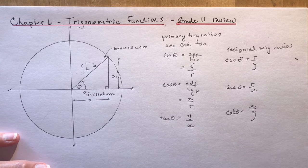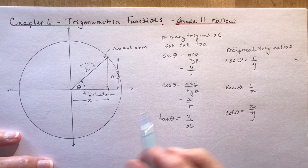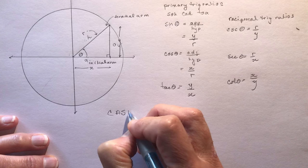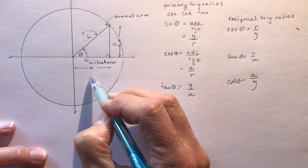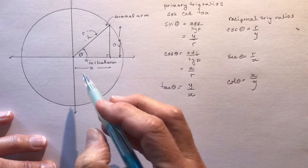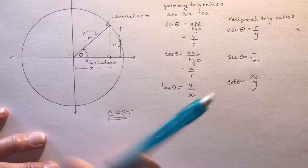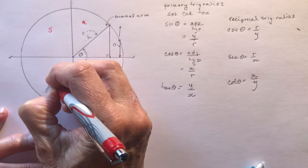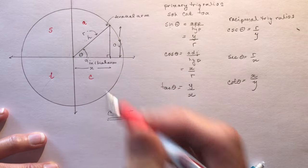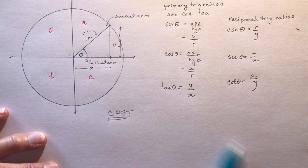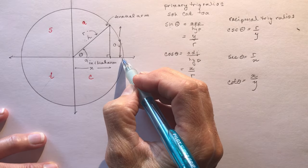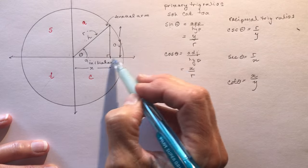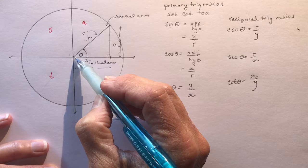The other thing you learned really well in grade 11 was the CAST rule. Everyone has a different way of labeling these — some say 'All Students Take Calculus,' some just say CAST. The problem is sometimes people don't remember which letter goes where. So we place them: C, A, S, T. What does that mean? In every 360 degrees, there are going to be two places where your trigonometric ratio will be positive. Everything is positive in the first quadrant.